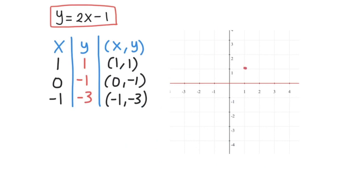The first one is 1,1, 0 comma negative 1 is here, negative 1 comma negative 3 is here. Then we can join them by drawing a line through those 3 points.